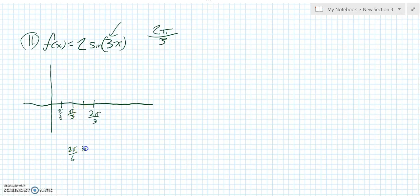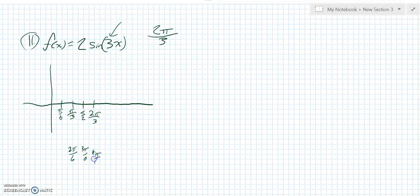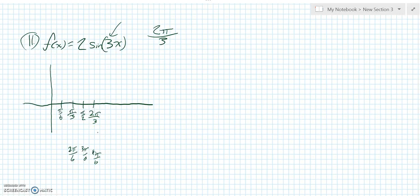The next one then would be 3 pi over 6, which is pi over 2. And then that would be 4 pi over 6, which is 2 pi over 3. So there's that place.